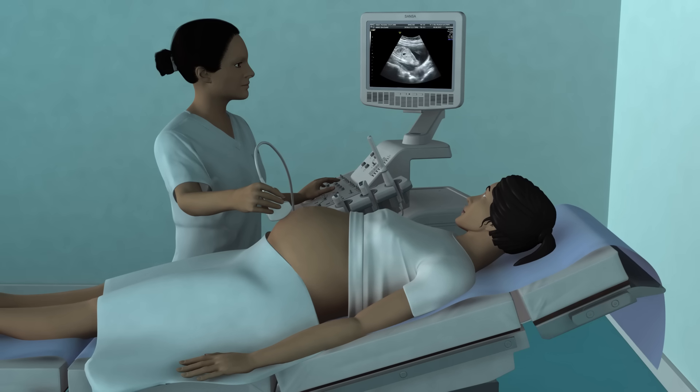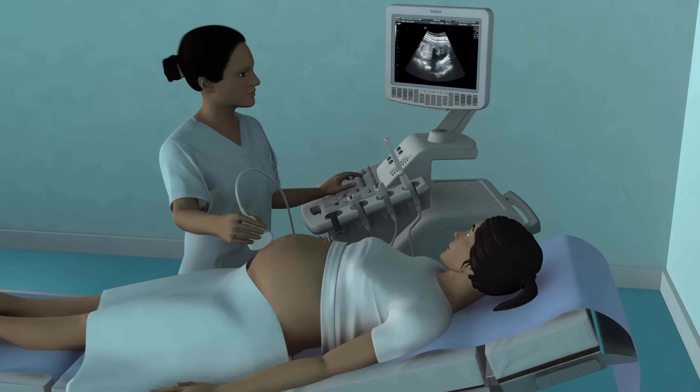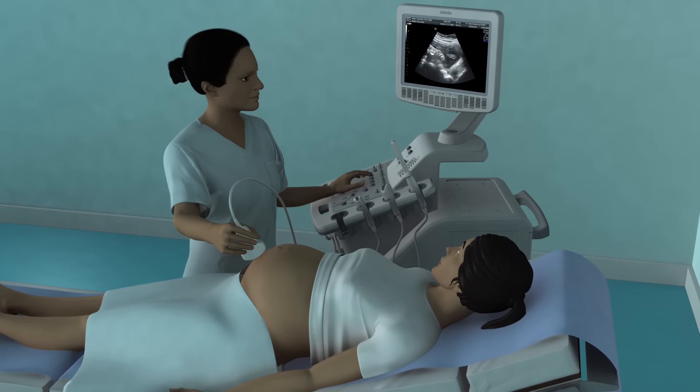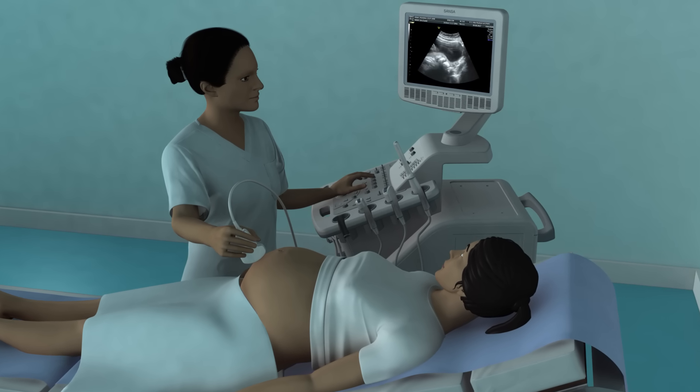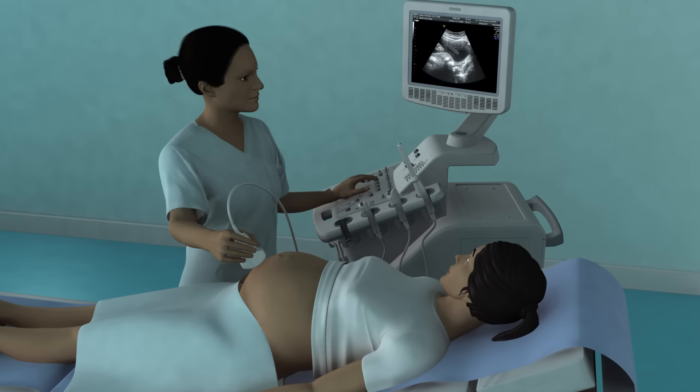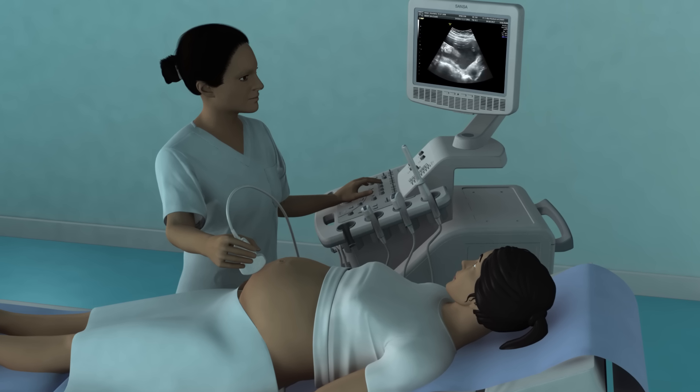Some common situations can prevent the probe from receiving a clear signal and produce unclear or distorted areas in the image seen on the screen. These are known as artifacts. Different types of artifact can commonly occur. Their effect can be reduced by scanning with the probe in a different position.